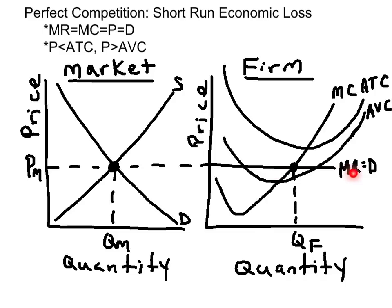This marginal revenue comes directly from the market. The perfectly competitive market sets the price and the firm takes the price. That becomes the firm's marginal revenue and demand curve.